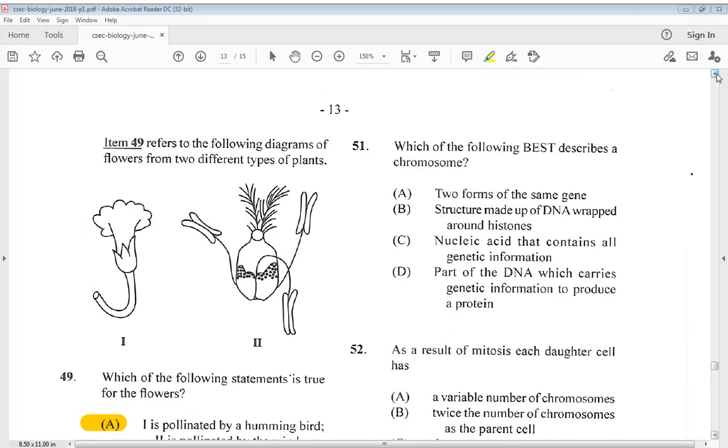Question 51. Which of the following best describes a chromosome? A. Two forms of the same gene. B. Structure made of DNA wrapped around histones. C. Nucleic acid that contains all genetic information. D. Part of the DNA which carries genetic information to produce a protein. So we know the answer is B.